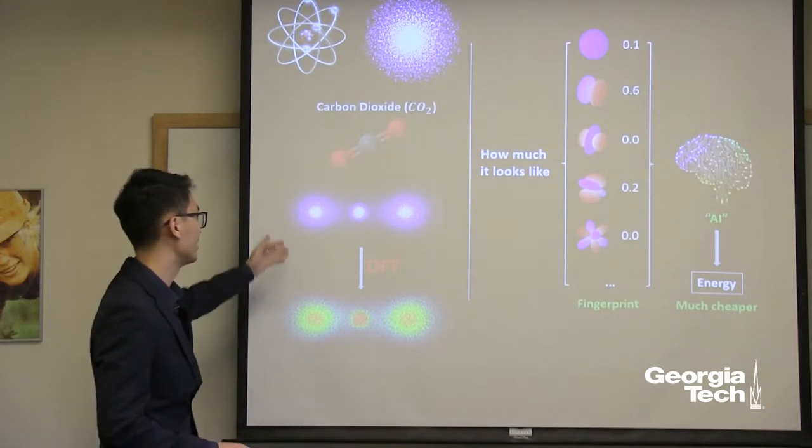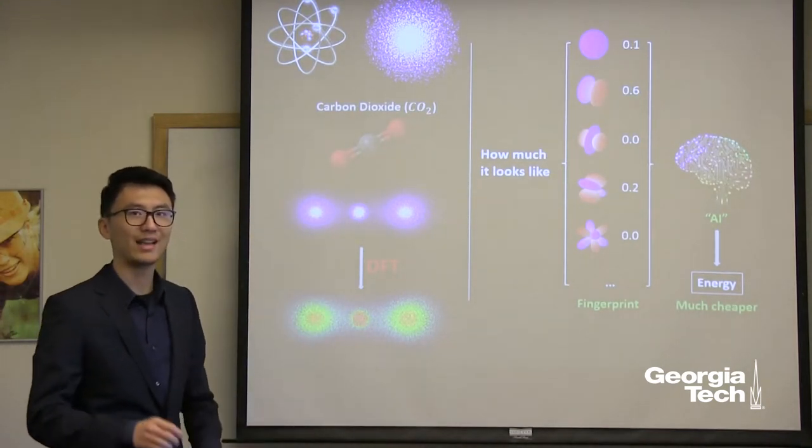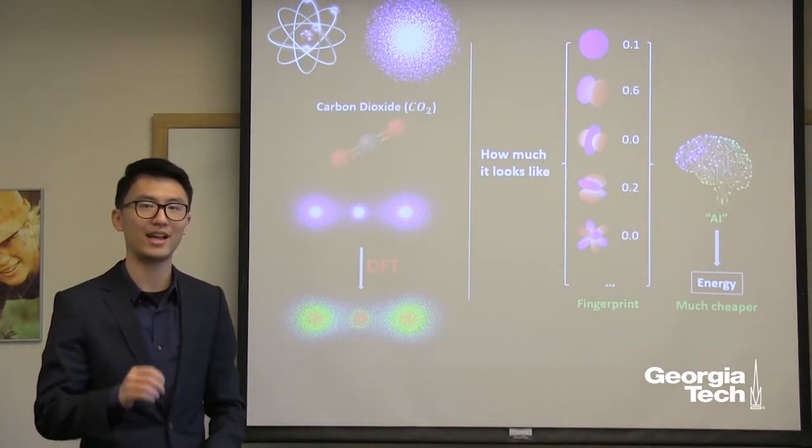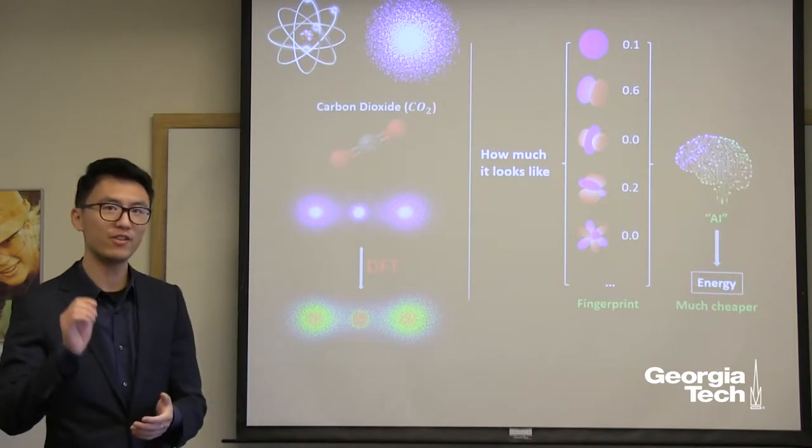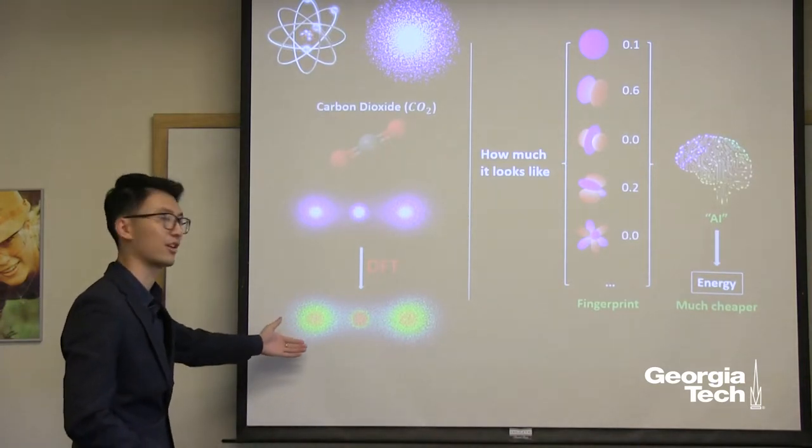You see, the cloud has different density at different spots. And this density and how it changes around defines the electronic environment of a spot. And different environment results in different energy, as you can see over here.